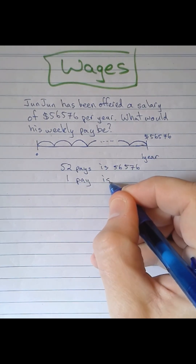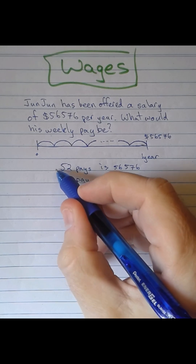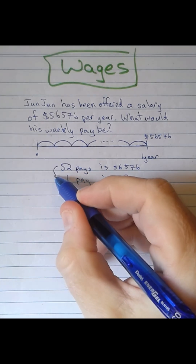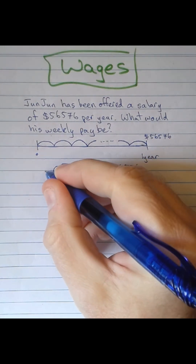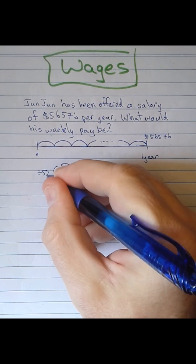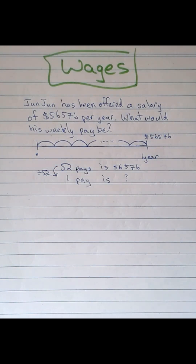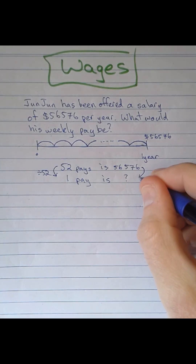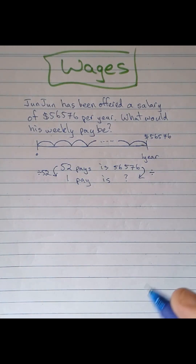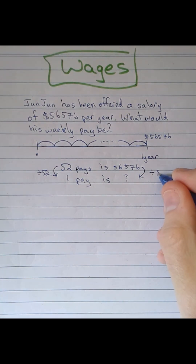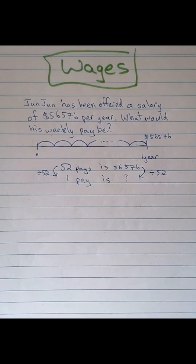Junjun wants to know what one pay is equal to. There's a proportional relationship between the amount of pay and the time that Junjun works. So moving from 52 down to one week of pay, we need to divide by 52. On the other side, we need to do the same thing — divide by 52 on that side as well.